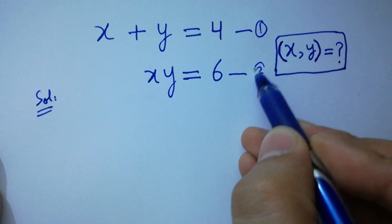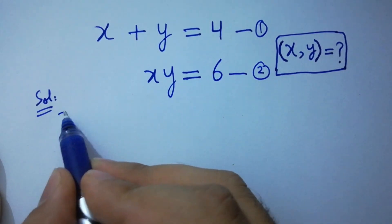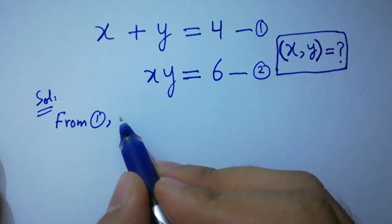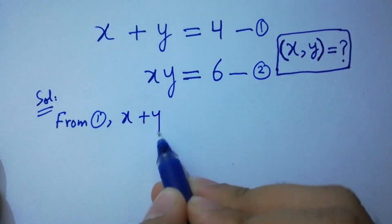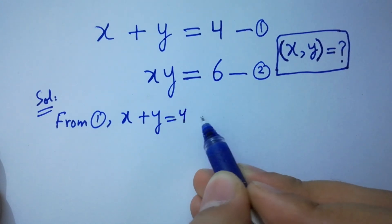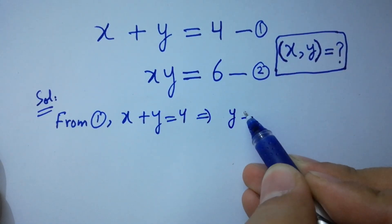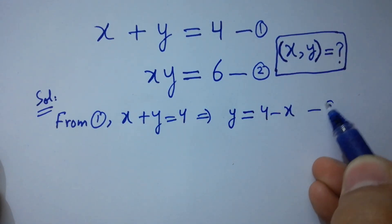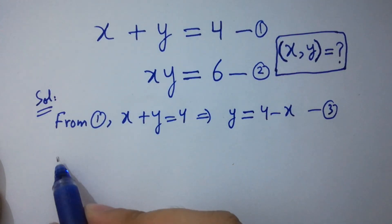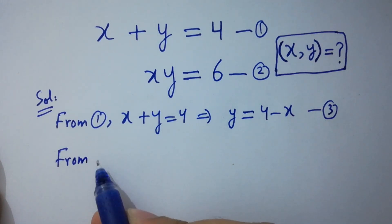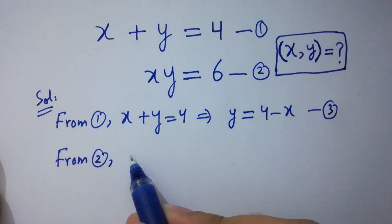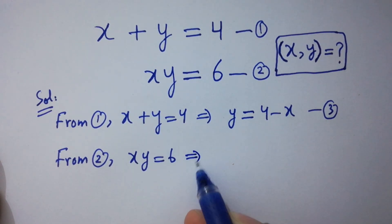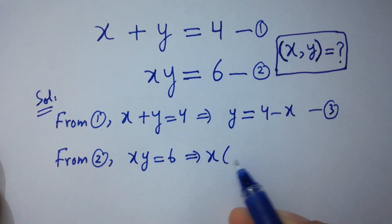From the first equation, x plus y equals 4, so y equals 4 minus x. Let this be the third equation. From the second equation, x times y equals 6. Substituting the value of y, we have x times (4 minus x) equals 6.